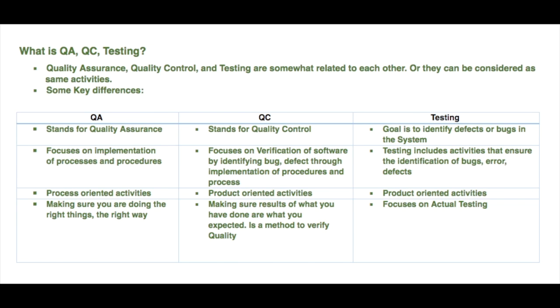Quality assurance is to make sure you are doing the right things the right way. Quality control is about making sure the results of what you have done are what you expected — it is a method to verify quality. Testing focuses on actual testing. Thank you for watching and don't forget to subscribe.